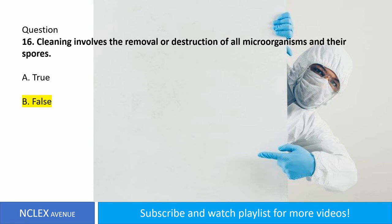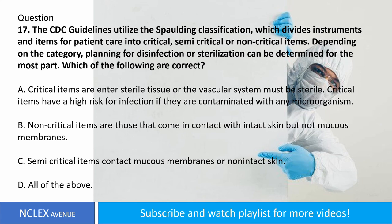Question number seventeen. The CDC guidelines utilize the Spaulding classification, which divides instruments and items for patient care into critical, semi-critical, or non-critical items. Depending on the category, planning for disinfection or sterilization can be determined. Which of the following are correct? A. Critical items enter sterile tissue or the vascular system and must be sterile, with high risk for infection if contaminated with any microorganism. B. Non-critical items are those that come in contact with intact skin but not mucous membranes. C. Semi-critical items contact mucous membranes or non-intact skin. D. All of the above. Answer: letter D. All of the above.